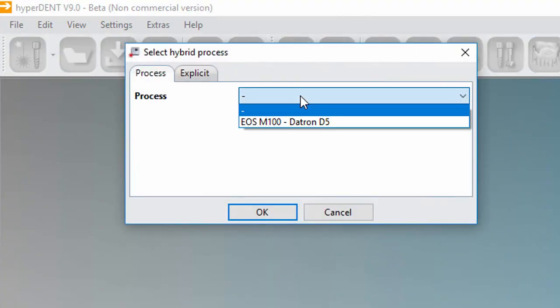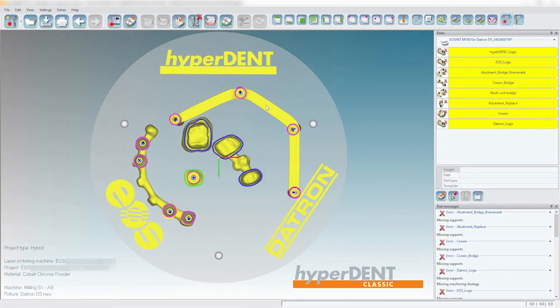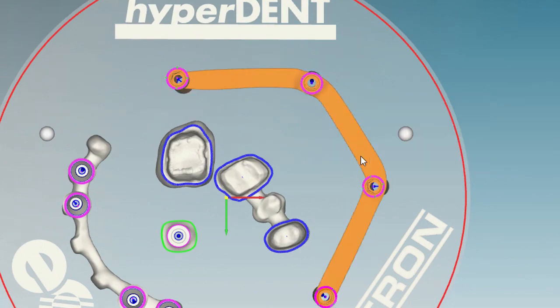Choose the machine combination of your choice. Afterwards, file import parts are nested automatically. You can also nest your parts manually.